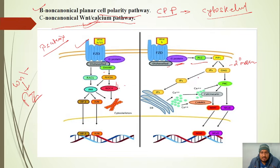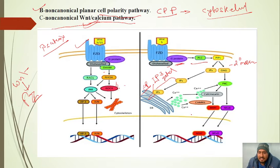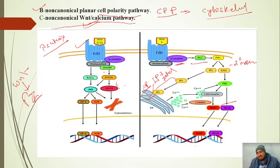IP3 diffuses through the cytosol to the endoplasmic reticulum (ER), which is the calcium store. IP3 opens the IP3-gated channel on the ER, releasing calcium into the cytosol. Calcium binds to and activates calcineurin, which is a phosphatase enzyme. Calcineurin dephosphorylates NFAT (Nuclear Factor of Activated T cells), which then translocates to the nucleus to activate calcium-regulated genes.